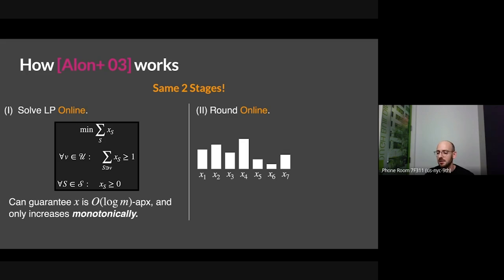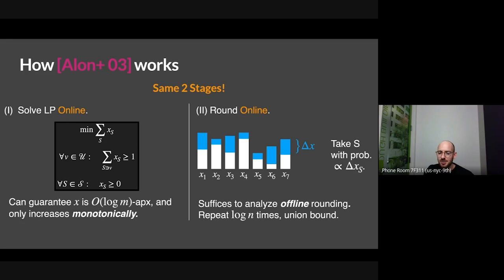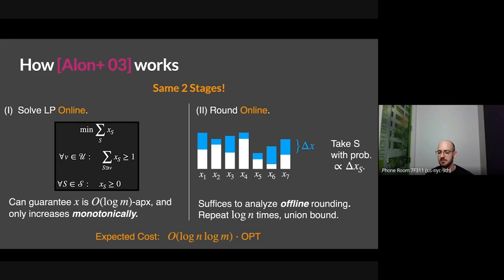This is powerful because it allows you to round online. If my solution at time t looks like this, at time t+1 it can only grow in every coordinate. Instead of sampling with respect to x_s, I can sample at every round with respect to just the change. If you do this cleverly and set the proportionality constant right, you can analyze this as if you're doing offline rounding at the end of the whole stream. The punchline is this two-stage analysis — solve an LP with a loss of log m, then do the same rounding and lose a log n — giving expected cost log n times log m. This is our benchmark.